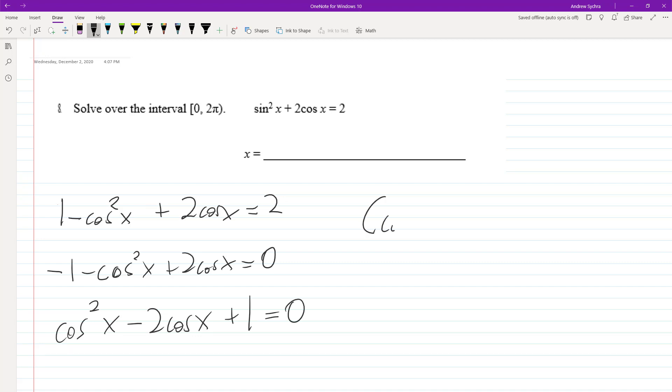So it looks like we can do cosine x minus 1, cosine x minus 1 equals 0. So it's a double root.